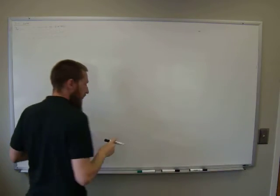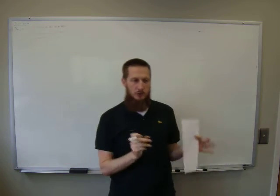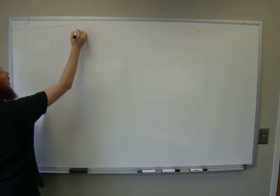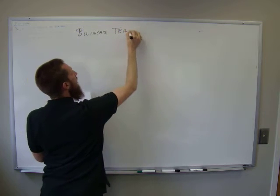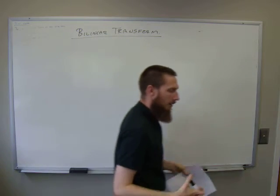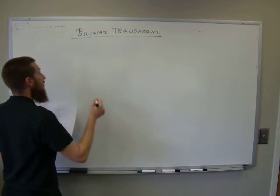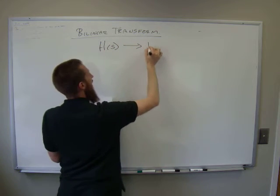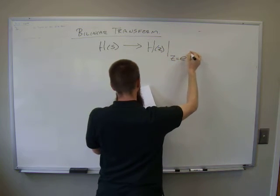Alright, so the last one that we're going to do — we are now going to explore a different way of converting things from the continuous time to the discrete time, things being filters specifically. This one is called the bilinear transform. It's another method; it accomplishes the same thing as the pole-zero matching, but it's just a different way. What we're trying to do is take some H of S and convert it to an H of Z, specifically where Z is equal to e to the S times T.